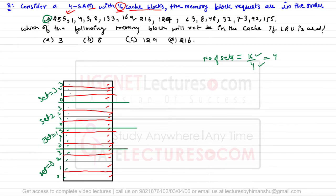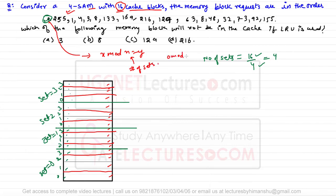To determine which set a block goes into, we use the formula: x mod n = y, where n is the number of sets. So 0 mod 4 = 0, meaning block 0 is placed in set number 0.